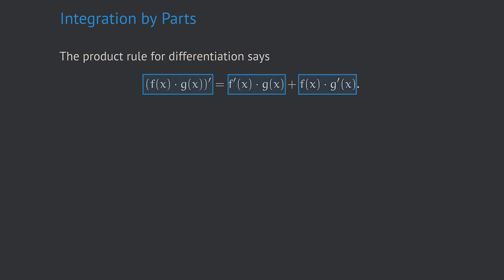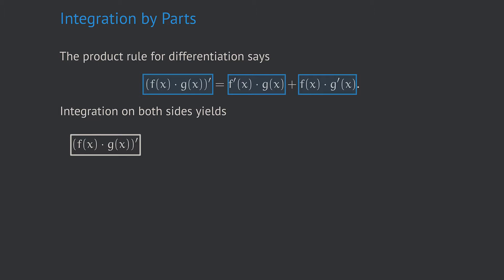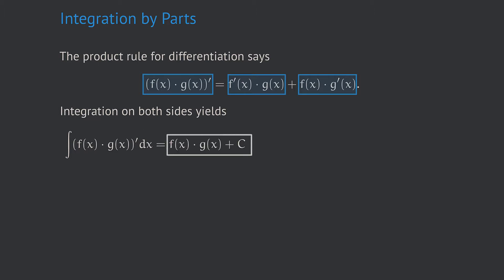Starting from this general equation, which is true for all differentiable functions f and g, we can formally integrate each side. Integrating the left-hand side means putting an integral symbol in front and a dx after the expression. This is an indefinite integral, meaning we want to find all antiderivatives for the integrand. But that is very easy because the integrand is already a derivative, so the antiderivative is just f times g plus c. Remember that f times g alone is just one of many antiderivatives, so we must add the plus c.